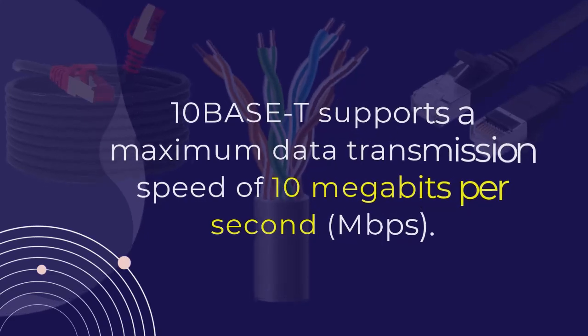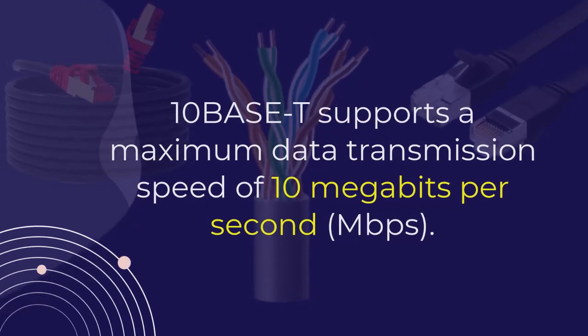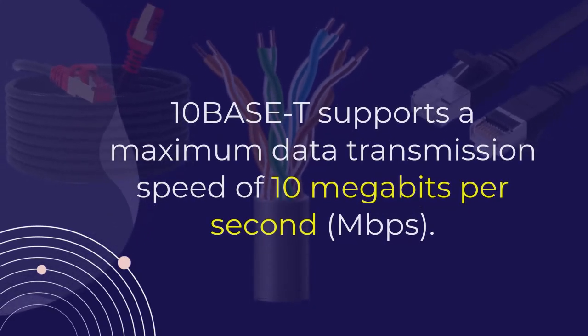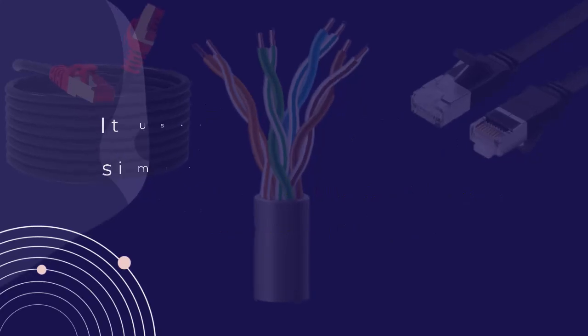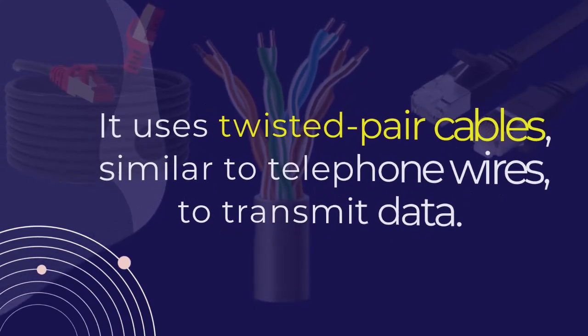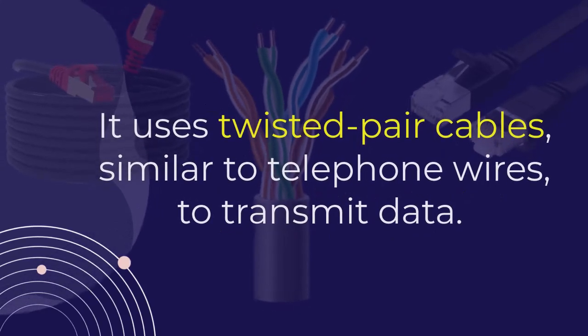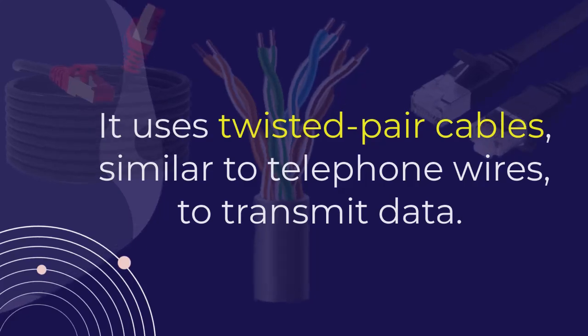10BASE-T supports a maximum data transmission speed of 10 megabits per second. It uses twisted pair cables, similar to telephone wires, to transmit data.